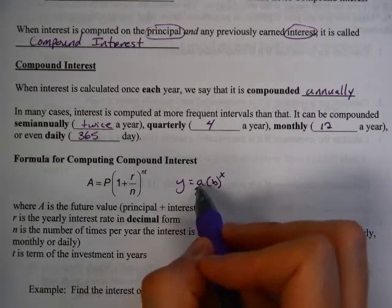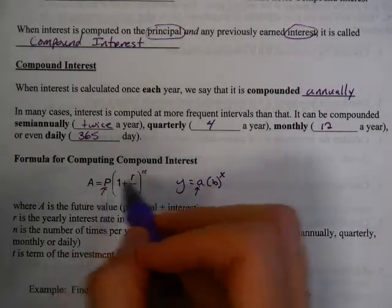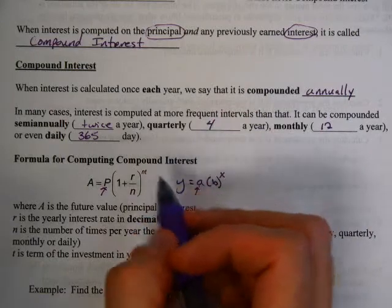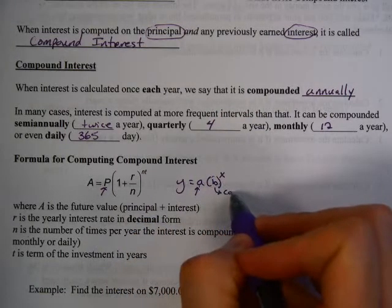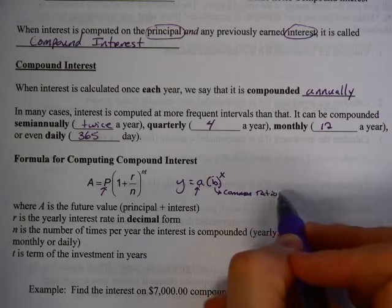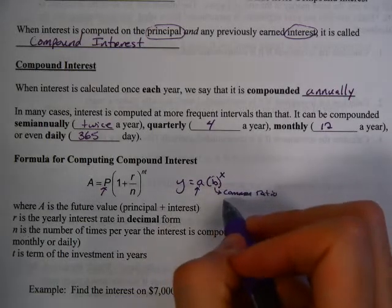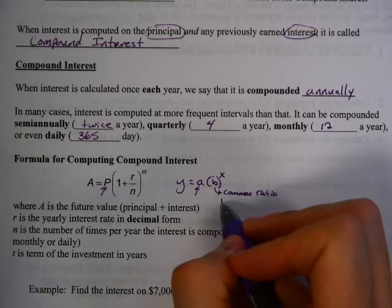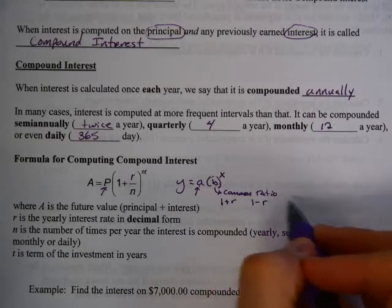Our exponential formula had A as the starting value. Well, P is also the starting value, it's just the money you start out with. B, we usually found B using the common ratio, or if we didn't have a common ratio, we would use our rate. So B would be 1 plus the rate, or it would be 1 minus the rate.